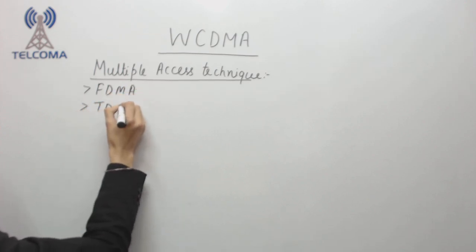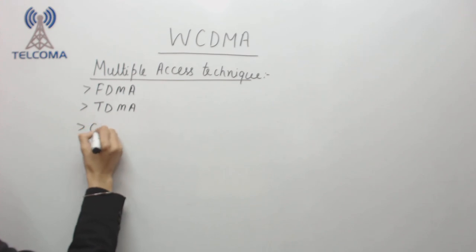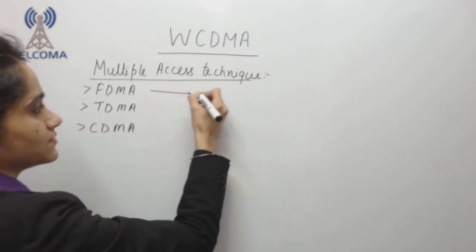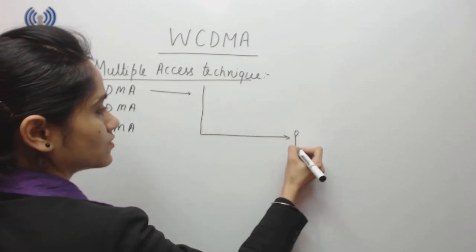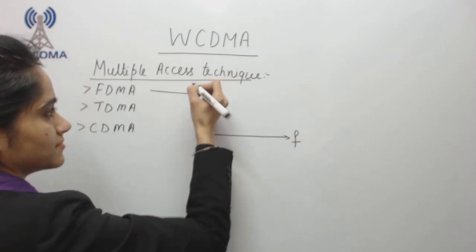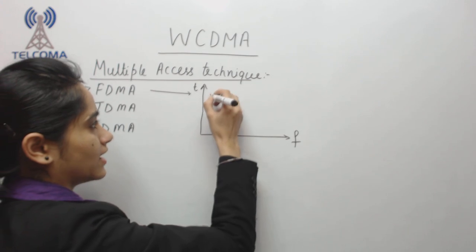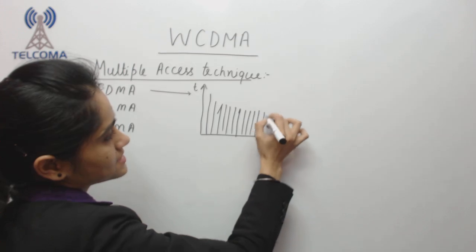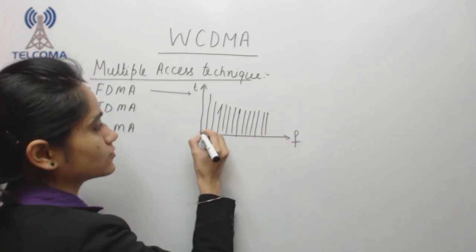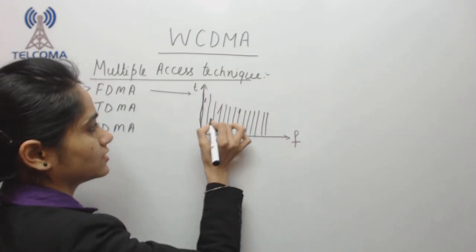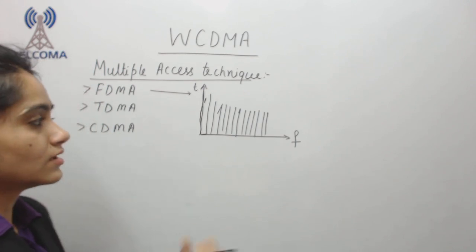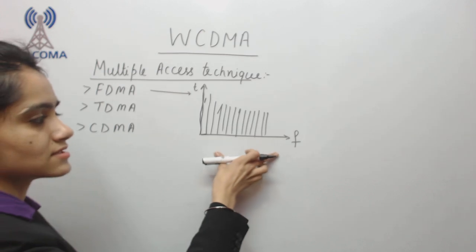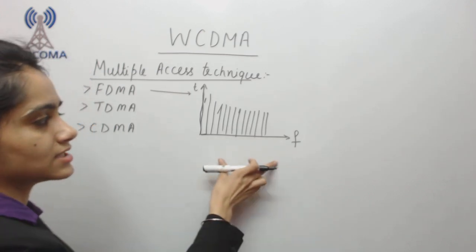In multiple access techniques we have FDMA, TDMA, and CDMA. In FDMA — Frequency Division Multiple Access — we divide the frequency axis and allocate portions to users, so each user gets a particular set of frequencies for their use. This way multiple users are accessing the frequency resource at the same time.